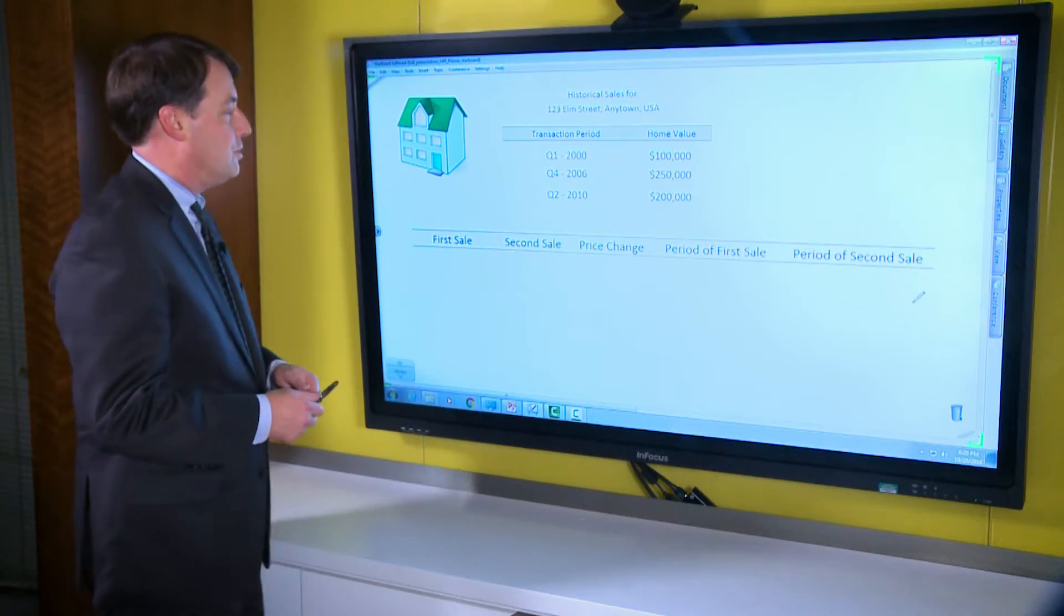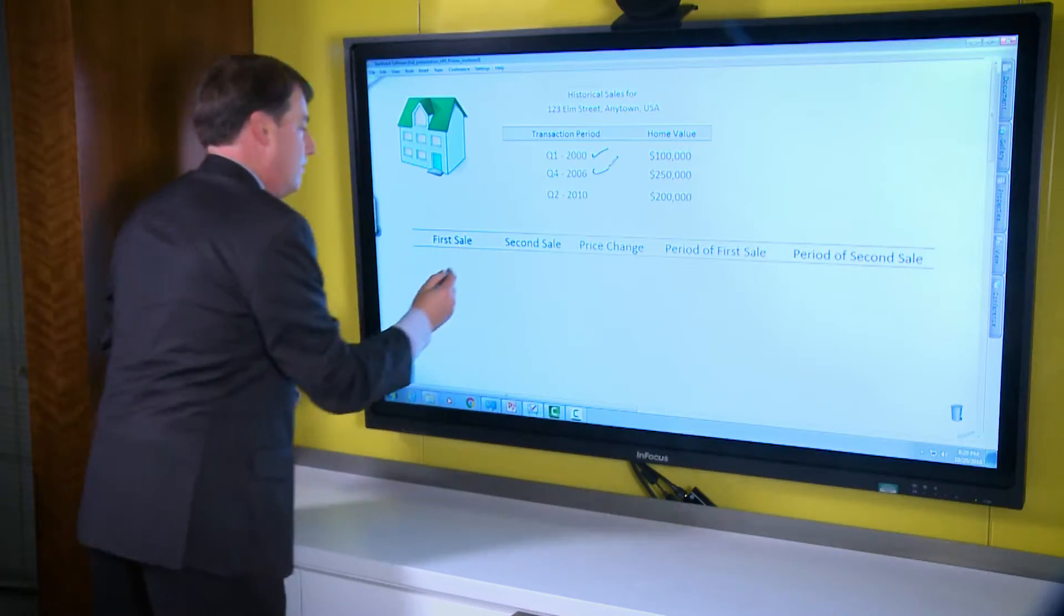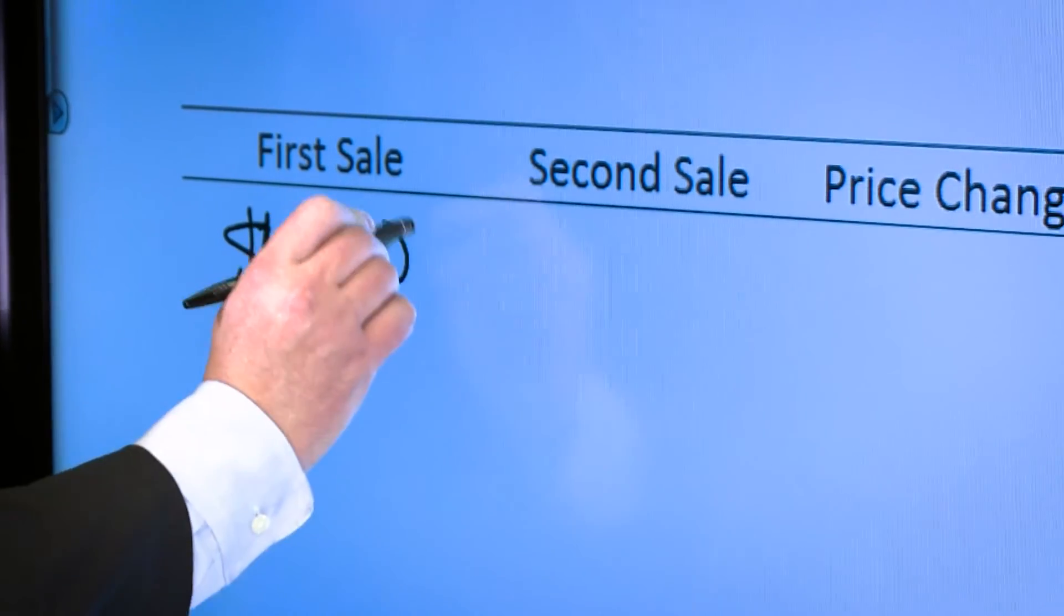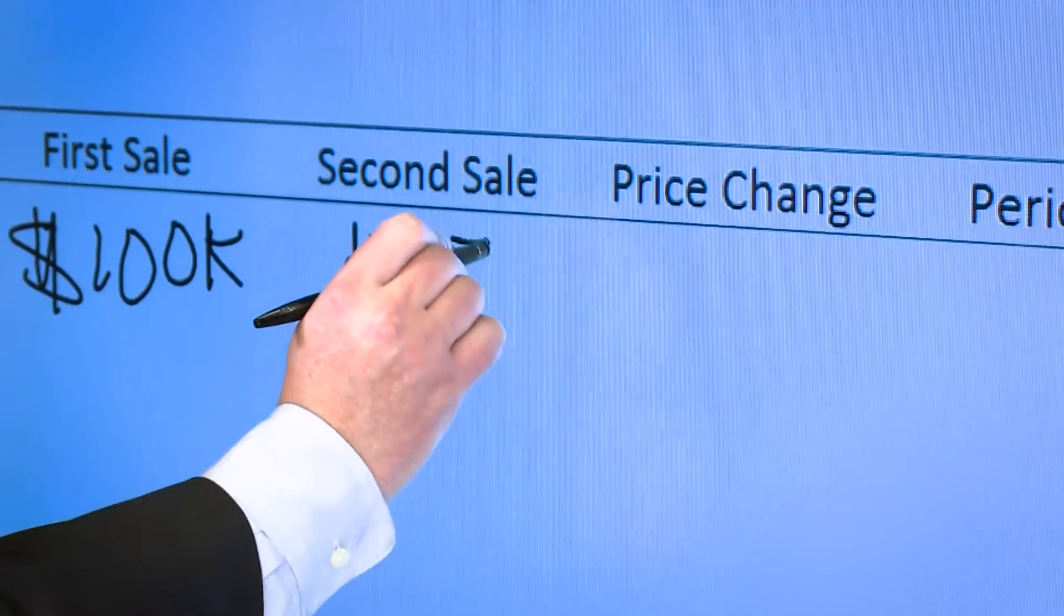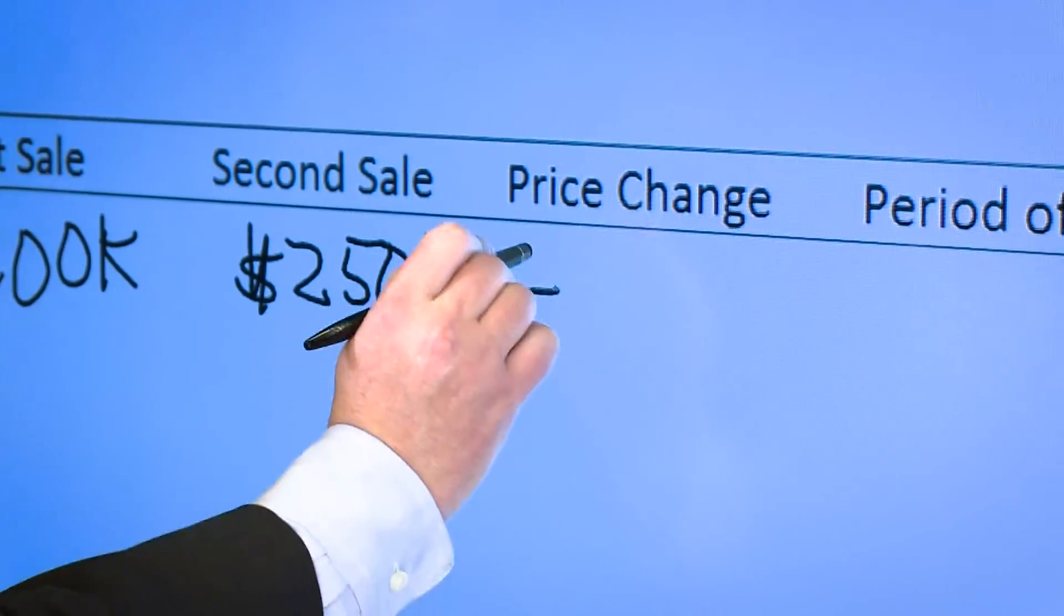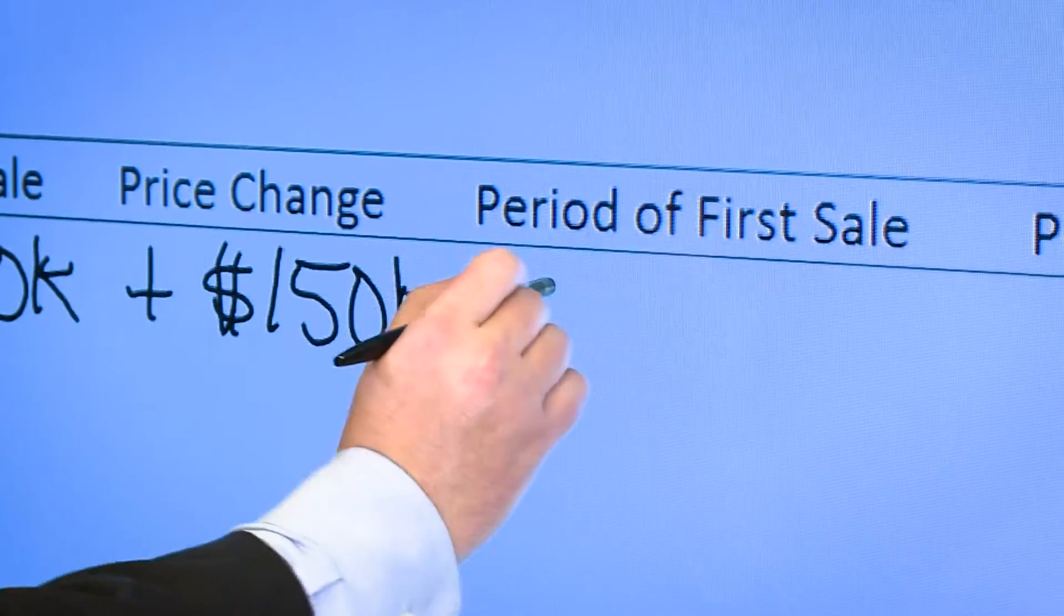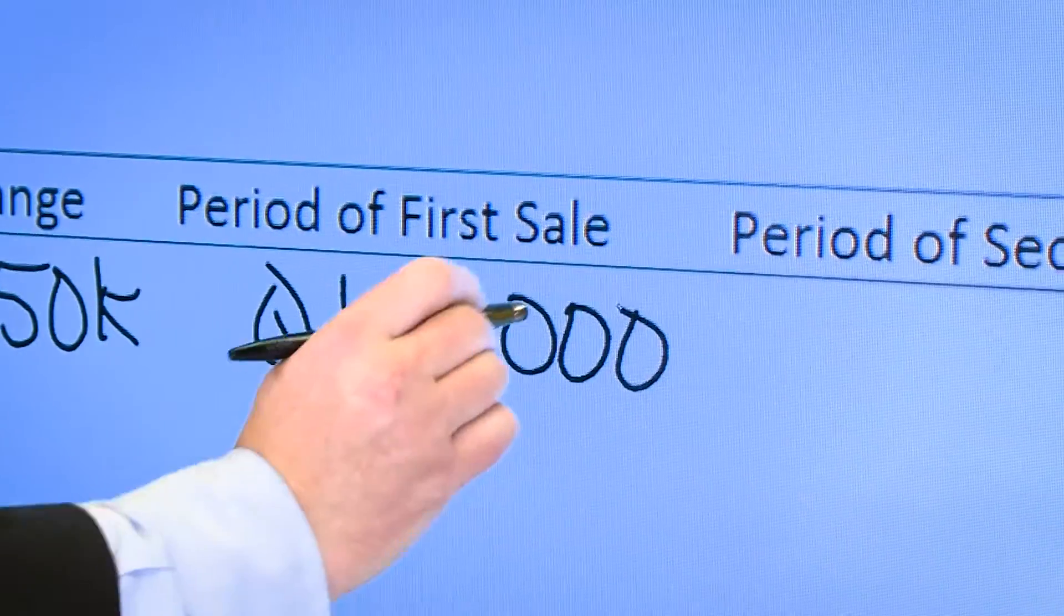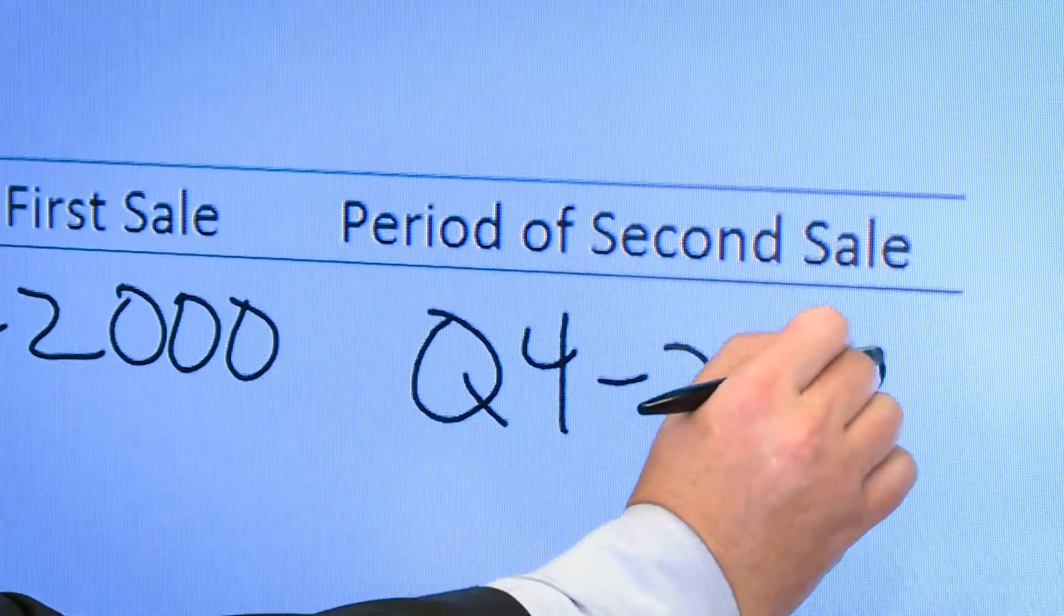The first pair would show the price change between the first and second transactions. So the first sale was for $100,000. The second sale was for $250,000, which meant that the price change was $150,000. The first time period was in the first quarter of 2000. The second sale was in the fourth quarter of 2006.